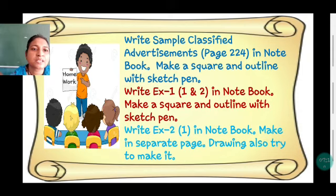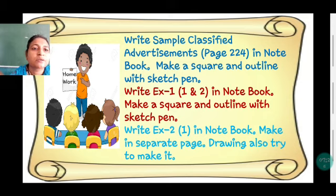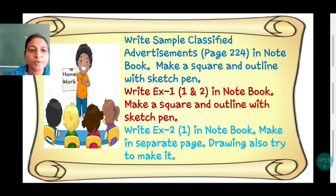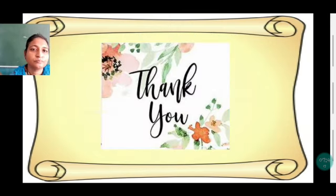Write the sample classified advertisements from page 224 in your notebook. Make a square and outline it with sketch pen, then write inside. Write Exercise 1, question number 1 and 2 in your notebook — make a square and outline with sketch pen, same as classified ad. Write Exercise 2, question number 1 on a separate new page. Try to make drawings also — make it very colorful and attractive. Thank you. May God bless you.